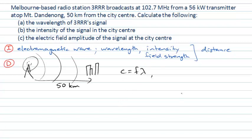We're also being asked about intensity. The intensity of an electromagnetic wave is related to the Poynting vector, which involves the cross product of the electric and magnetic fields that make up the electromagnetic wave. It's the cross product of those two vectors divided by μ₀, the permeability of free space.